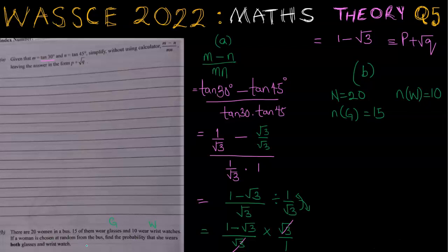We are told that a woman is chosen at random from the bus, and we should find the probability that she wears both glasses and a wristwatch. So what we are asked to obtain here is the probability that a woman that's picked wears both glasses and a wristwatch. And we know that in probability, 'and' is a multiplication. So probability of glasses and wristwatch is probability of glasses times probability of wristwatch. And we know that probability is the ratio of the number of required outcomes over number of possible outcomes.